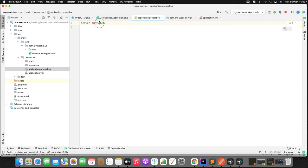Now I'll start the catalog service while in half-open state. The catalog service is back up. With the circuit breaker now in half-open, I'll make three calls — one, two, three. Refreshing the actuator health endpoint, you can see the status is now closed because catalog service is online. Calling the endpoint again returns the actual response from catalog service. This is how circuit breaker status keeps changing: closed to open, open to half-open, and from half-open back to either open or closed based on service availability.